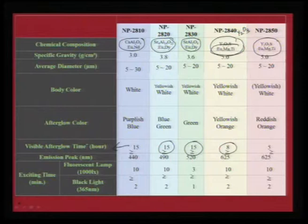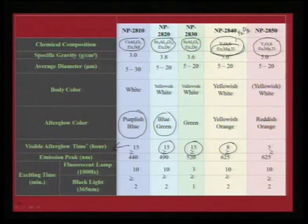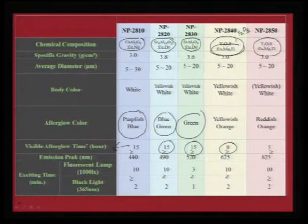Depending on their constituents they have different light-output characteristics. Calcium aluminate with europium is very selective for purplish blue; strontium aluminates give blue and bluish green; the lower strontium aluminate analogue with europium is specially meant for green fluorescence; and red and yellow are mostly associated with yttrium sodium-based phosphors.